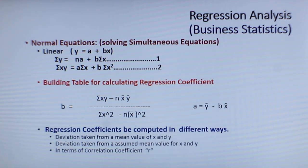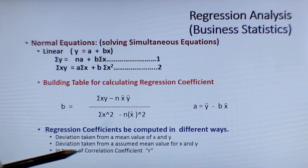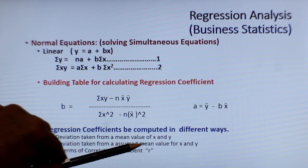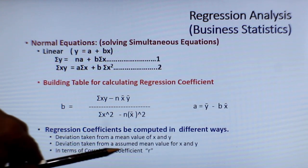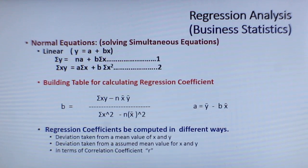There are many methods you can use. The regression coefficient can be computed in different ways: deviation taken from the mean value, deviation taken from the assumed mean value. All these things you can do. In terms of correlation coefficient also you can calculate. Let us take an example and then see how you can arrive at the regression coefficient.